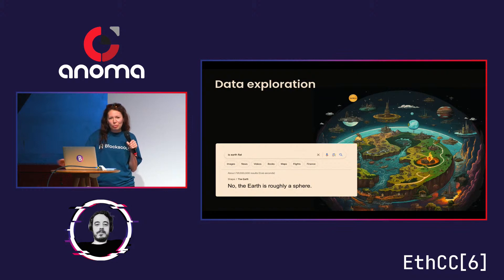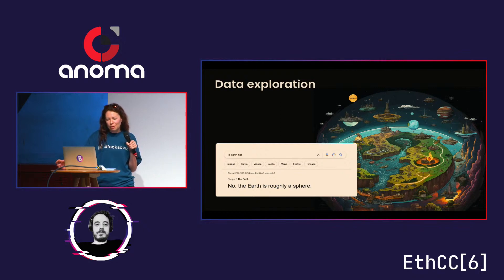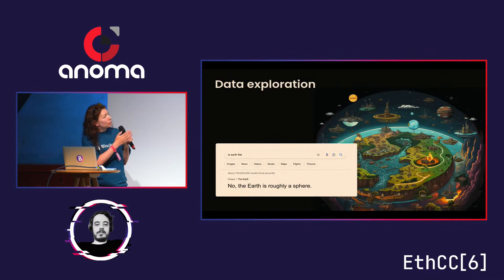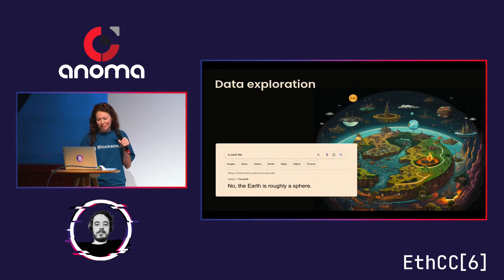We thought that Wikipedia, global connectivity, and Google would end the era of illiteracy and everyone would be able to get a degree online and get knowledge of every piece of information available to humans. And yet, by now, we see the rise of flat earth theories, anti-vaxxer movements, and conspiracy theories of all kinds.